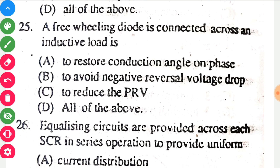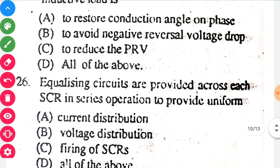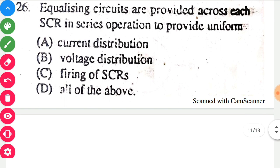A freewheeling diode connected across an inductive load — the correct option is A: to restore conduction angle on phase. A freewheeling diode is connected across an inductor to eliminate flyback, which is the sudden voltage spike seen when supply current is suddenly reduced or interrupted. When the voltage spike occurs the conduction angle changes, so we use a freewheeling diode to restore that angle.